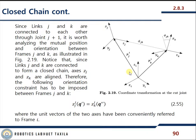We move from frame i to frame j and also from frame i to frame k. Since links j and k are connected to each other through joint j+1, it is worth analyzing the mutual position and orientation between frames j and k, as illustrated in figure 2.19. Since links j and k are connected to form a closed chain, axes z_j and z_k are aligned.